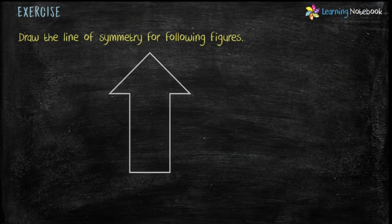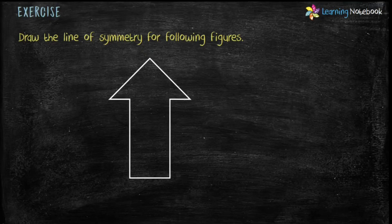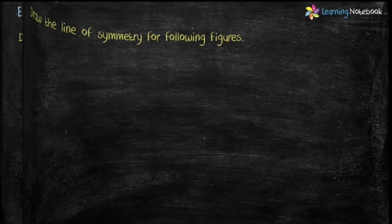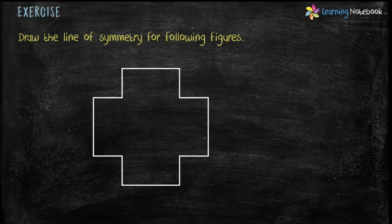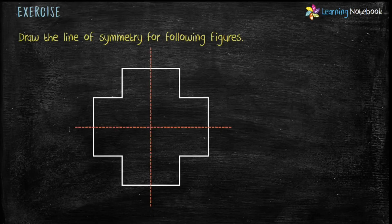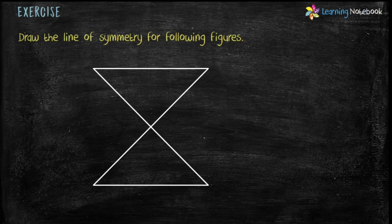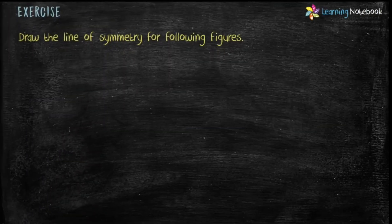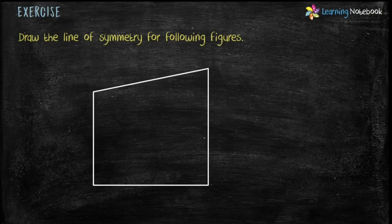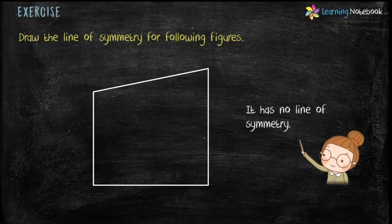Now we have to draw the line of symmetry in this figure. It has one line of symmetry as shown here. In the next figure, there are two lines of symmetry — horizontal as well as vertical. The next figure also has two lines of symmetry — vertical as well as horizontal. The last figure has no line of symmetry, because we cannot fold it in half either horizontally or vertically.